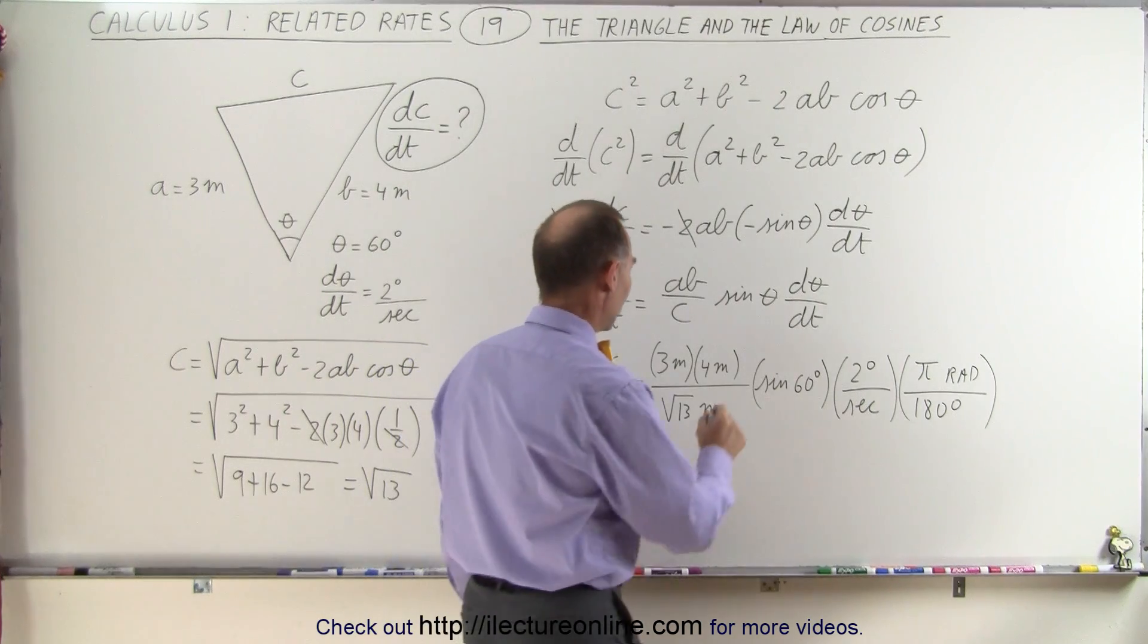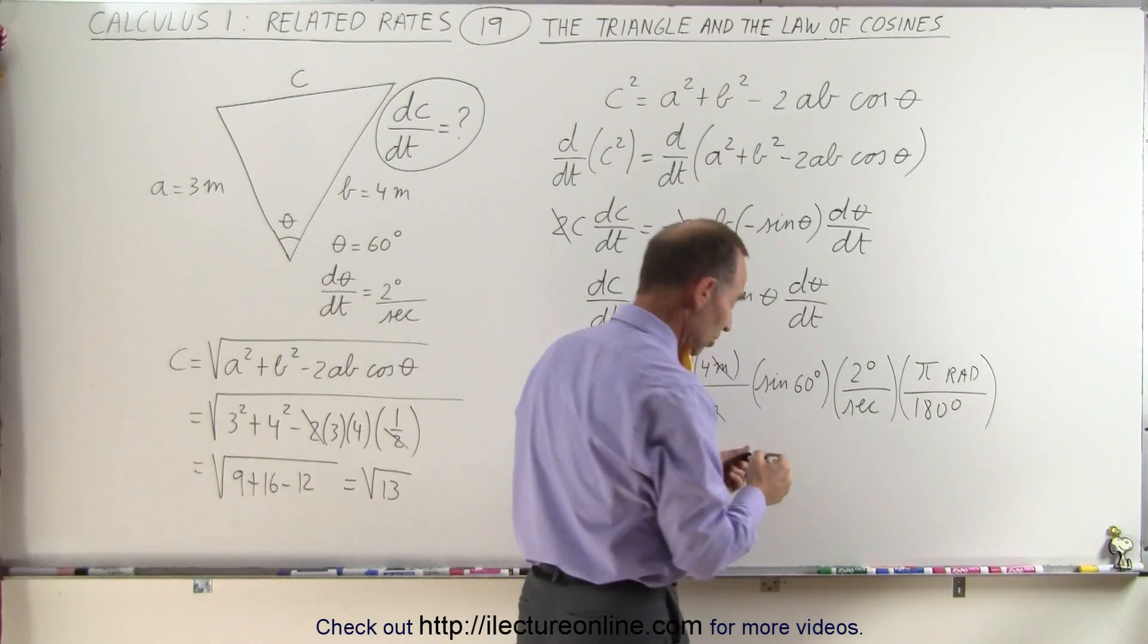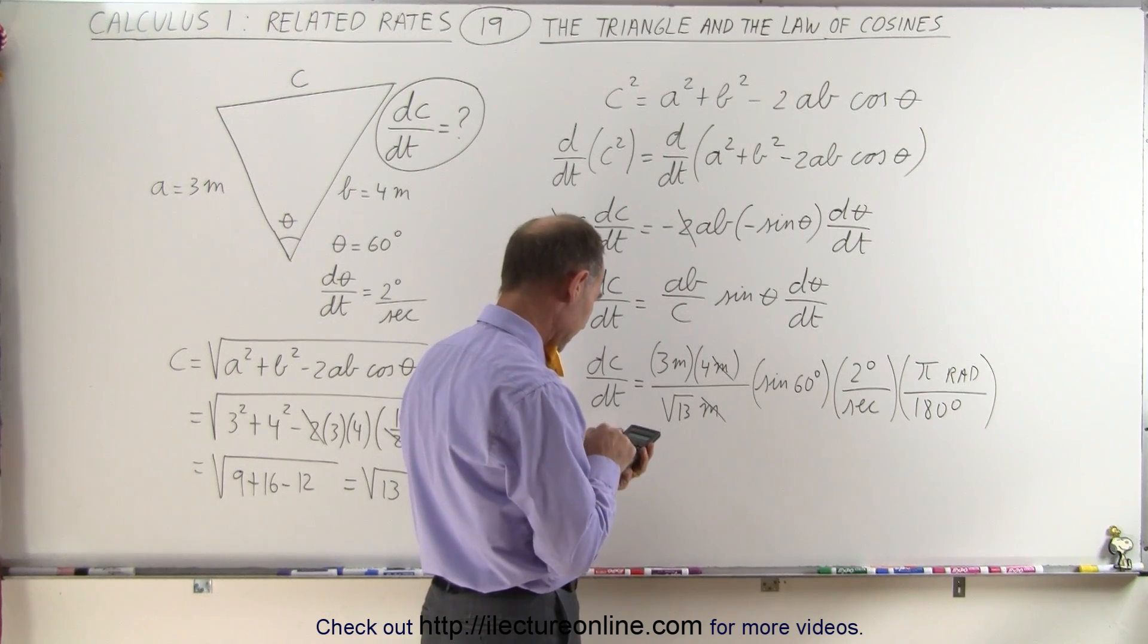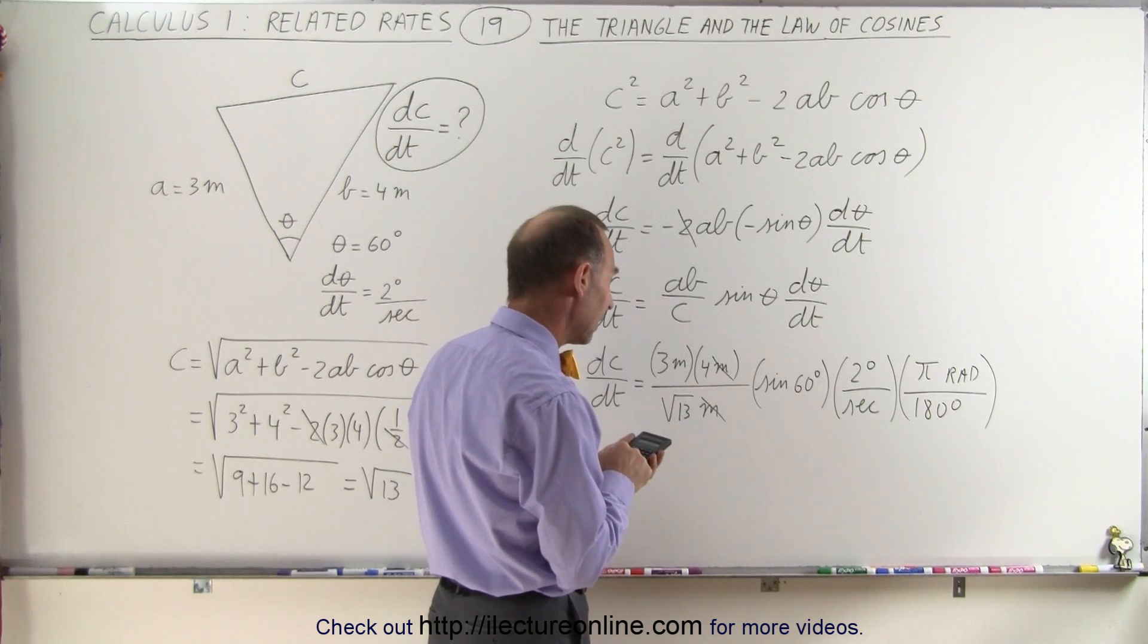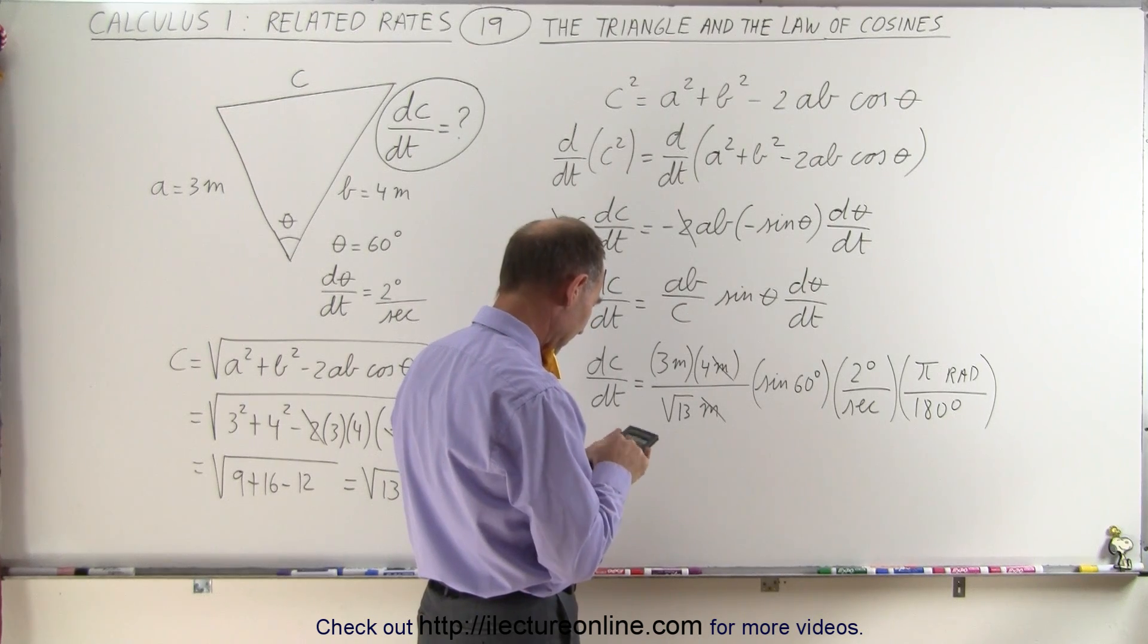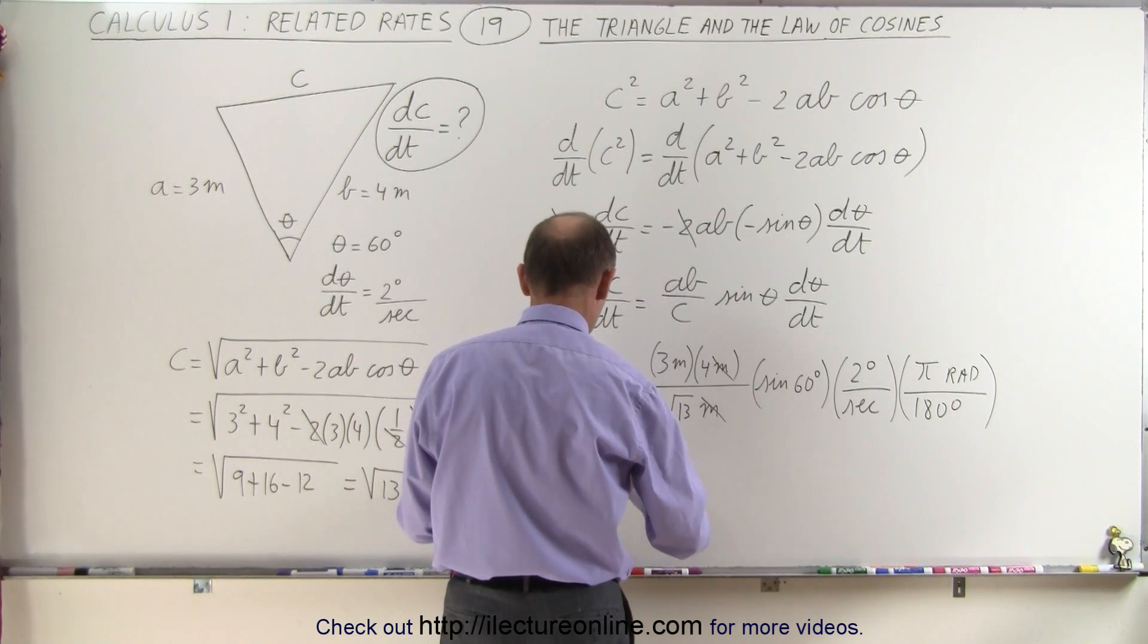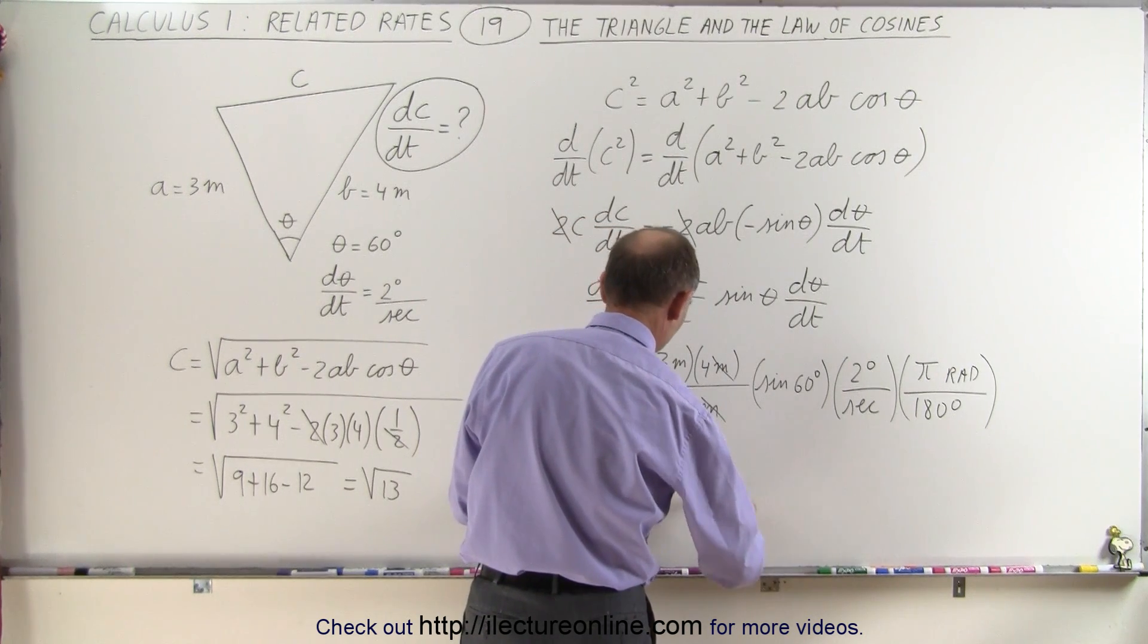Now we're ready to take care of everything. The meters cancel out here. We have meters per second, and radians is a non-unit, so now we need to calculate it. 3 times 4, which is 12, divided by the square root of 13, times the sine of 60, times 2, times π, divided by 180. And that leaves us with dC/dt equals 0.1 meter per second.